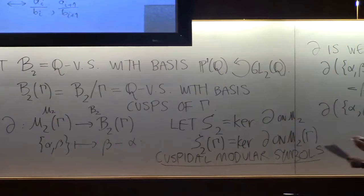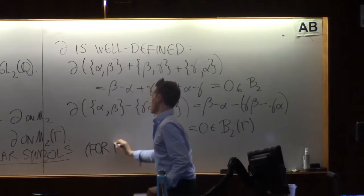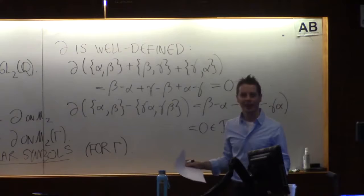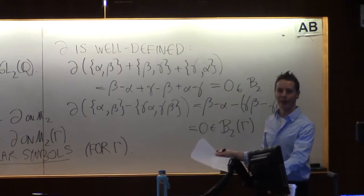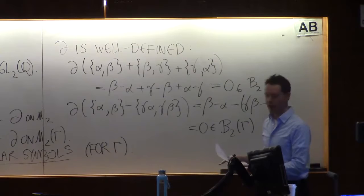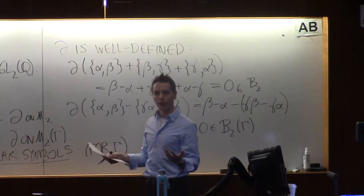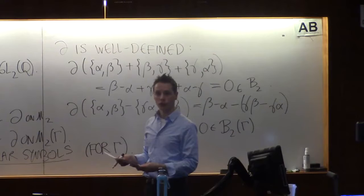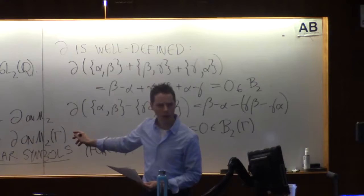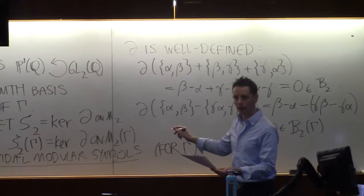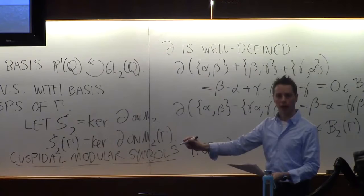Why are they called cuspidal modular symbols for gamma? Well, because they're related to cusp forms, implicitly here, as opposed to Eisenstein series or more general modular forms. That's the reason why cusp. But if you're thinking topologically, it's because you're getting loops. They're linear combinations of paths whose endpoints are in the boundary, but whose images in X(Gamma) are linear combinations of loops with the same endpoint.